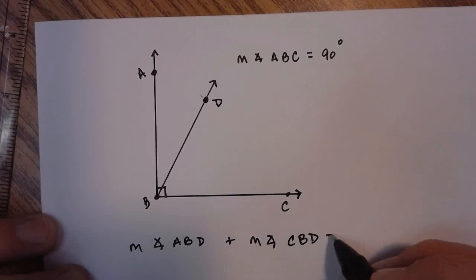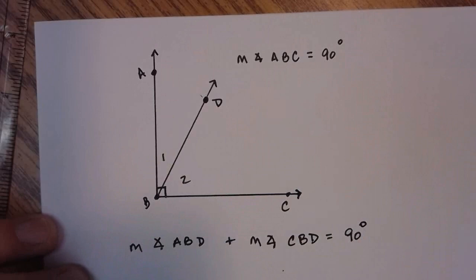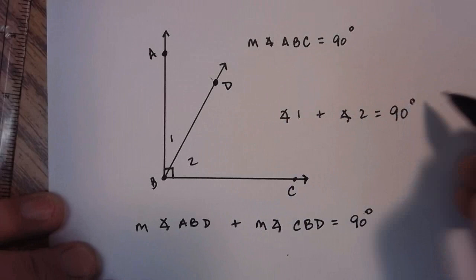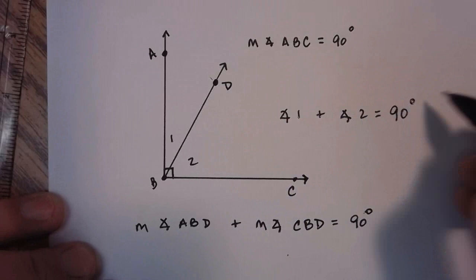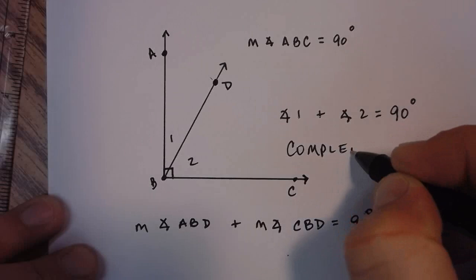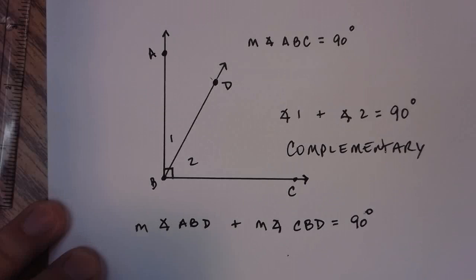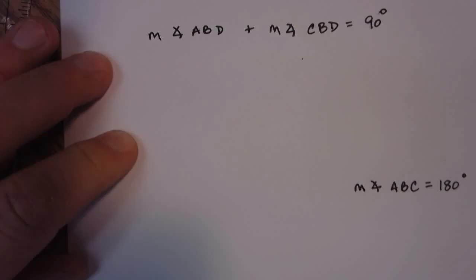because angle one plus angle two makes up that right angle. So these two angles, if you added angle one plus angle two, you would get 90 degrees. These two angles are special angles called complementary. And we're going to talk about that on page five here in just a minute. So complementary angles are two angles that will add to 90 degrees or make a right angle.